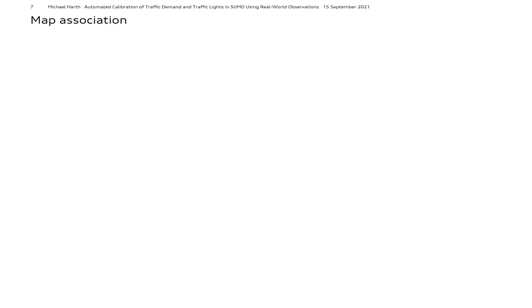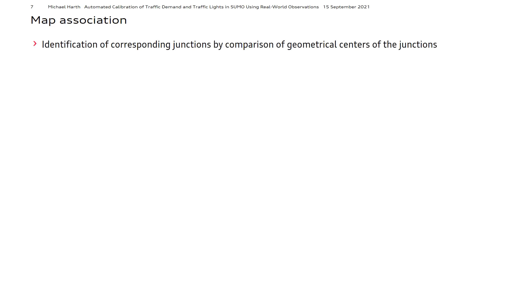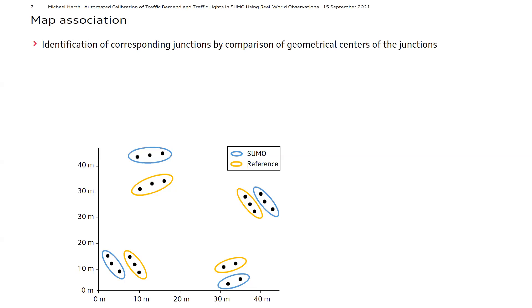For transferring signal groups to Sumo, the inbound lanes of the respective junction in the Sumo network must be derived and matched to the inbound lanes from the reference map. This association should work in an automated manner to avoid unnecessary manual rework. The corresponding junctions from Sumo and the reference map are identified by comparing their geometrical centers and taking nearest neighbors. Matching is then a two-step procedure, which aids traceability and makes it easier to assess if the automated process works or if manual correction is needed.